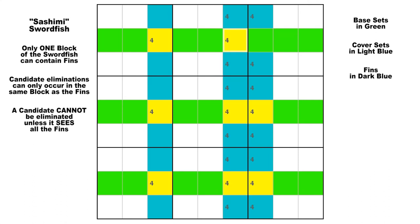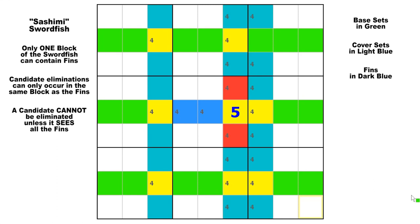If there is only one other base candidate in the base set where the candidate is missing, like here in row 2, and there are no fins, then the pattern would be reduced to a naked single, leaving an X-wing in the lower right. And if one of the base sets has two base candidates and the third position is the one that's missing, like in row 5, then without fins this would simply be a normal swordfish. But if there are any fins in that block, you can apply the sashimi principles. If either of those fins is true, these two 4s will be false because there can only be one 4 in block 5.